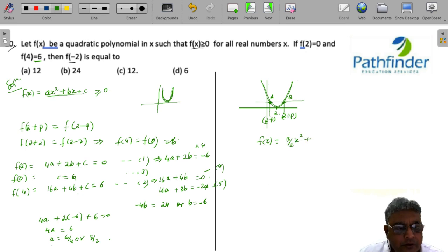plus bx. So b is -6. So we can have -6x plus c is equal to c. So this is your quadratic polynomial and putting the value of x as -2, we get 3 by 2 into (-2)² minus 6 into (-2) plus 6.